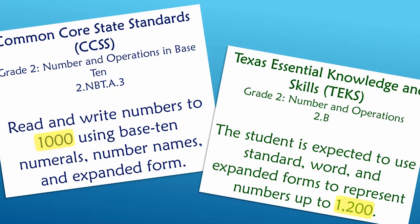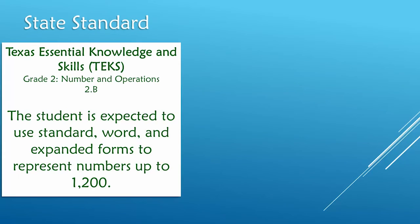As you can see here, students in Common Core are expected to read and write numbers to 1,000, while students in Texas are expected to read and write numbers up to 1,200. Remember, this place value skill is found in the state standards, but the strategies and resources used to teach it may look different from state to state or even from school to school.